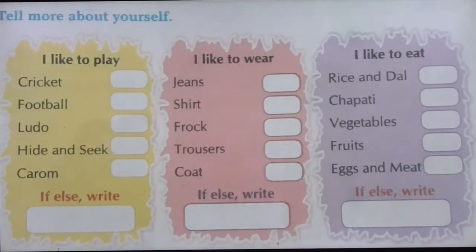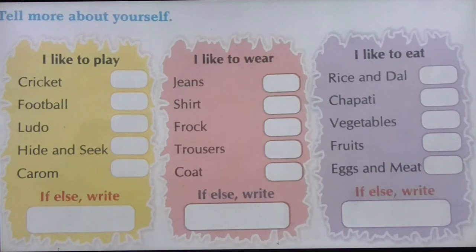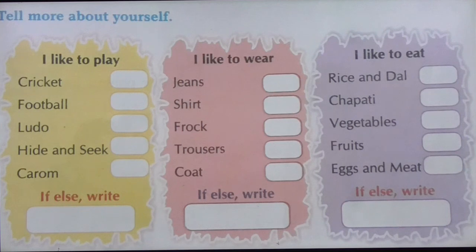There is one more activity — tell more about yourself. I like to play — what do you like to play? Cricket, football, ludo, hide-and-seek यानी चुपन-छुपाई, carrom board — जो भी आपको पसंद है उसे tick करना है। अगर इसमें से कोई पसंद नहीं है तो नीचे अपना पसंदीदा game लिख सकते हैं। Next: I like to wear — jeans, shirt, frock, trouser, coat — जो पसंद हो tick करें।